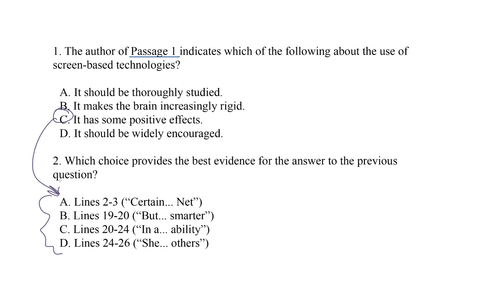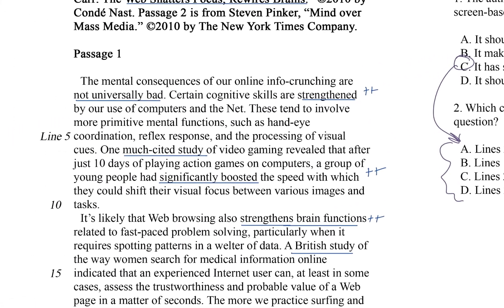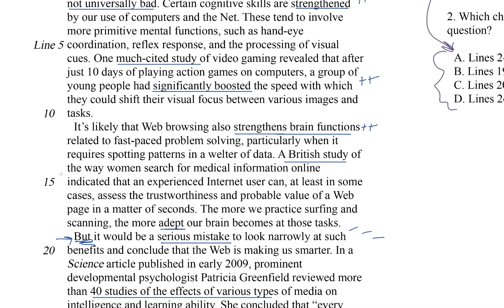So I'm going in, looking at choice B, lines 19 to 20, starting with but, ending with smarter. But it would be a serious mistake to look narrowly at such benefits and conclude that the web is making us smarter. Does this tell me anything about screen time? Yeah. It says it's maybe not all good, so let's scan the choices of the first question for a match.